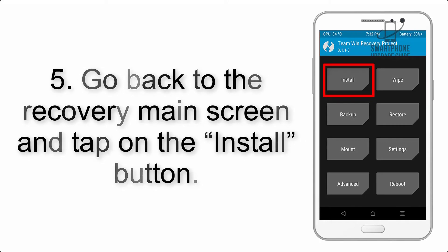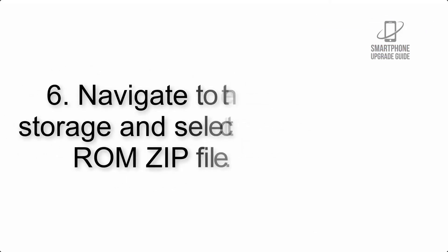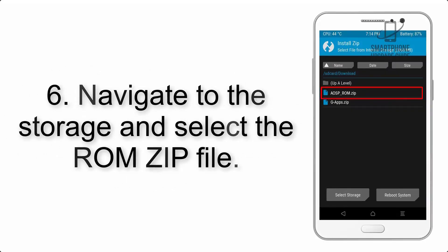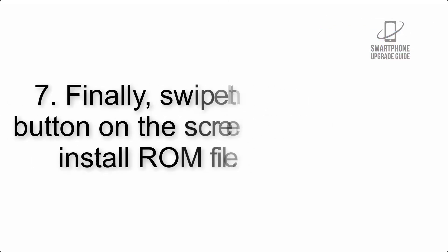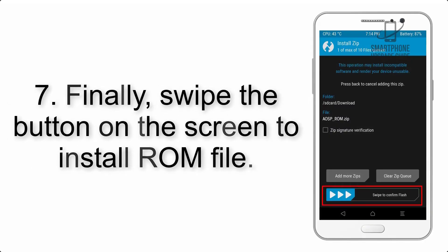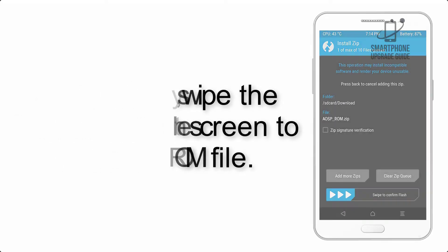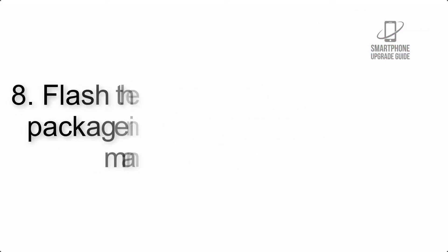Step 5: Go back to the recovery main screen and tap on the Install button. Step 6: Navigate to the storage and select the ROM zip file. Step 7: Finally, swipe the button on the screen to install the ROM file.